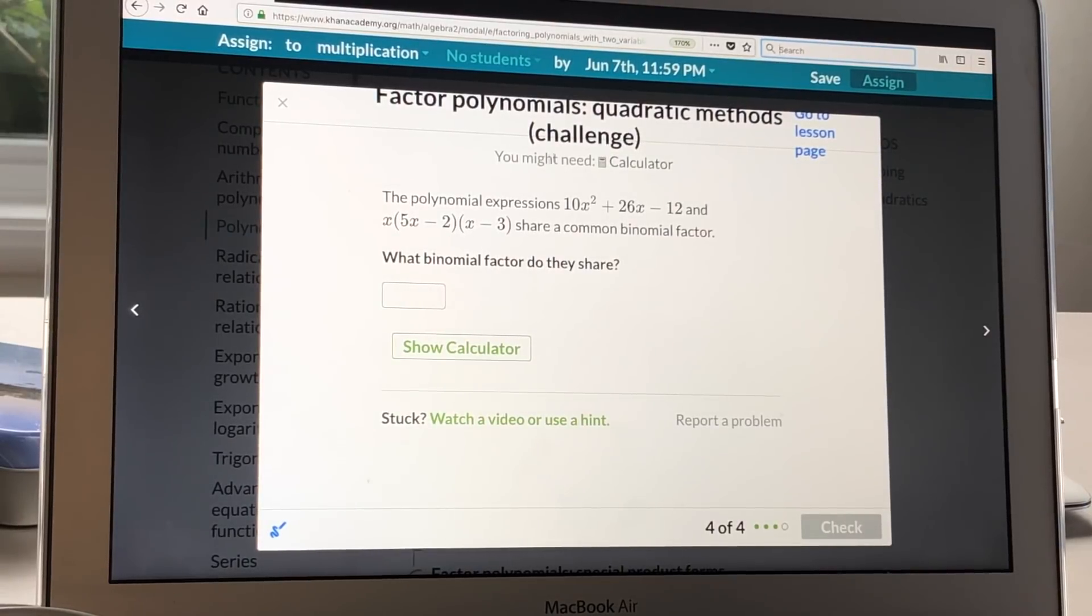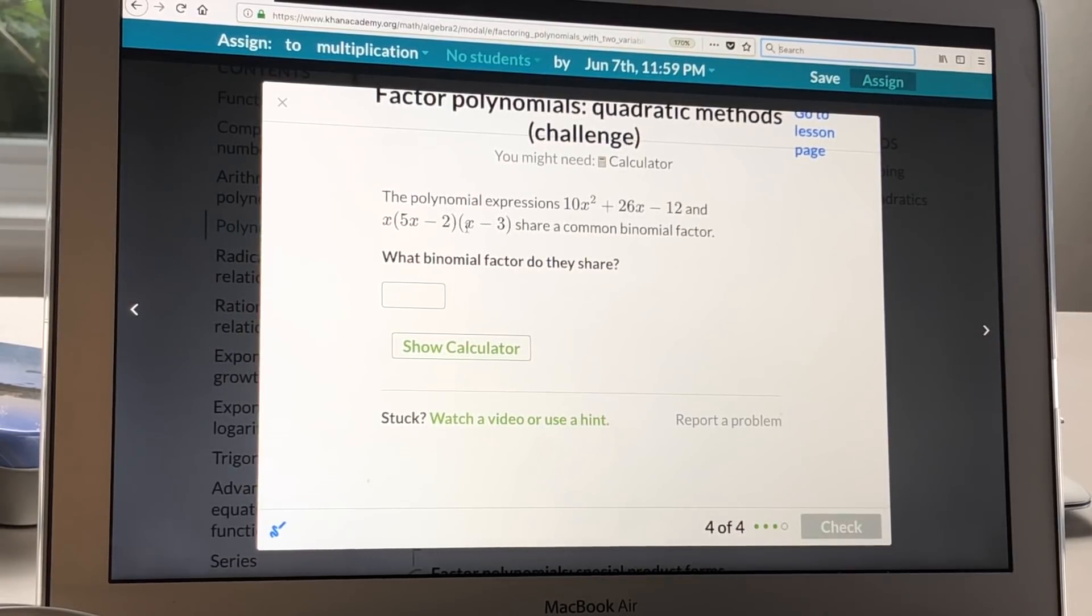Okay, hello dear friends. Here is the next one. The polynomial expression 10x squared plus 26x minus 12 and x times 5x minus 2 times x minus 3 share a common binomial factor. What binomial factor do they share?